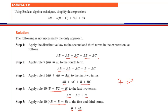Solution mein step number one mein hum ne dekhna hai ke is expression mein koi aisi term hai jo multiply ho sake within the given expression. Do term aisi hain jisme multiplication possible hai: ek second term hai jisme A multiply ho raha B plus C ke saath, aur third term hai jisme B multiply ho raha B plus C ke saath. A ko B+C ke saath multiply karne se do terms aayengi: AB + AC. Aur third term B(B+C) se do terms likhi jayengi: BB + BC.